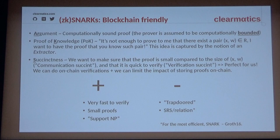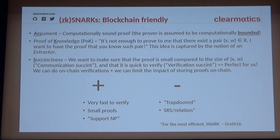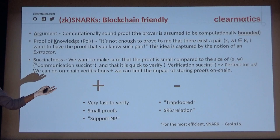SNARKs have been discussed a lot at this conference. The key takeaway is that SNARKs are not perfect, but they're pretty good in the blockchain setting: they are very fast to verify — important since verification must not violate consensus rules — and the proofs are small, which matters since proofs are settled on-chain. They can support NP, meaning you can prove almost anything. The main drawback is that they are trusted-setup based — you need to generate toxic waste and run an MPC to produce a common reference string.